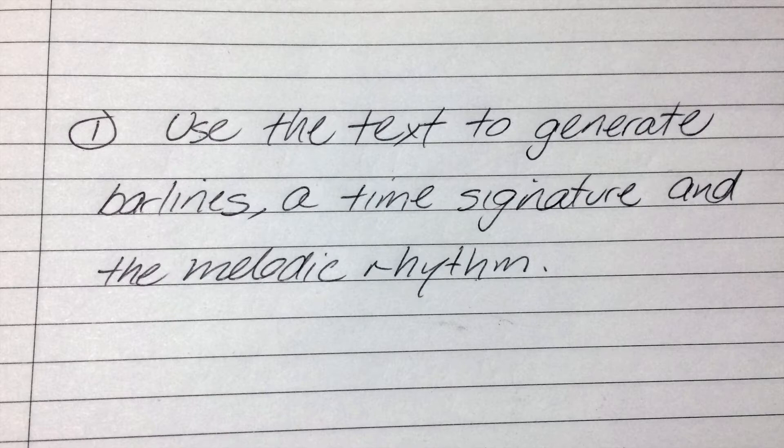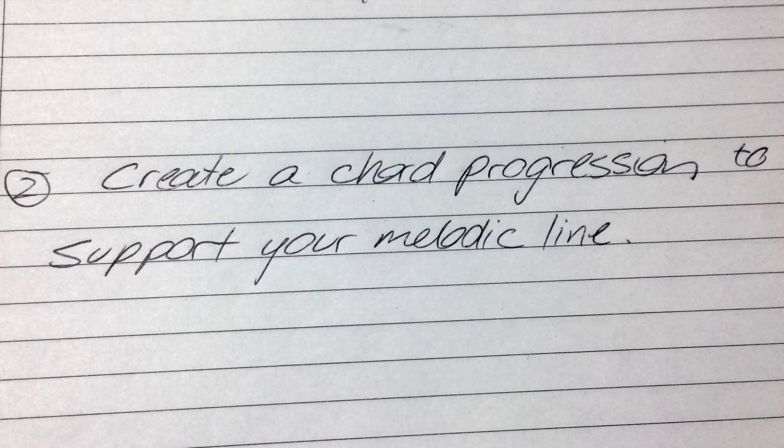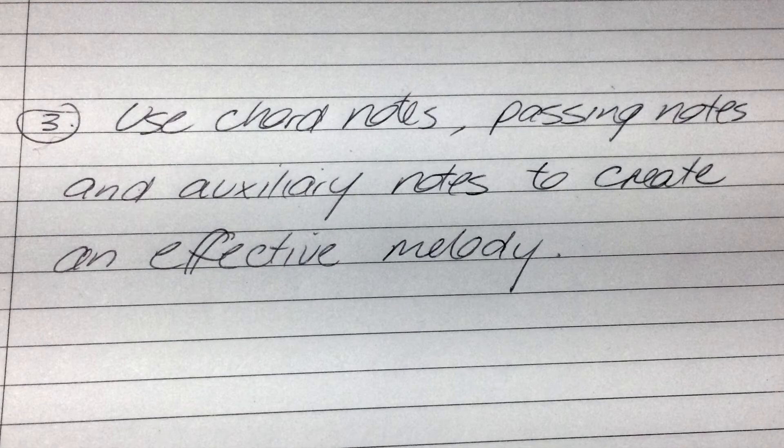So let's quickly recap the word setting process. Number one: use your text to generate bar lines, a time signature, and the melodic rhythm. Number two: create a chord progression to support your melodic line. And finally: use chord notes, passing notes, and auxiliary notes to create an effective melody.